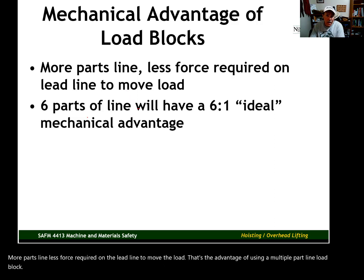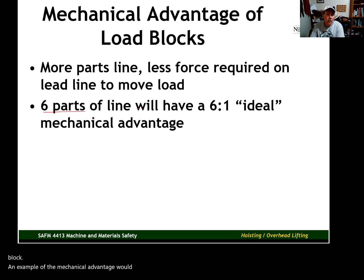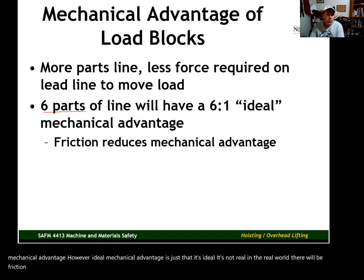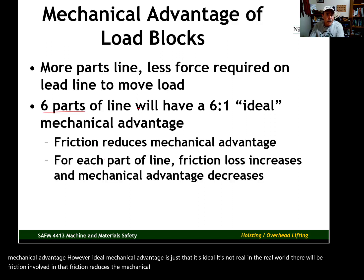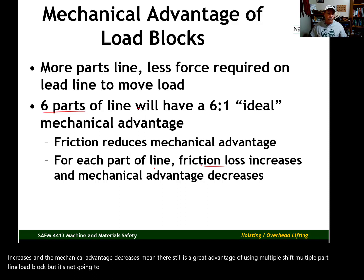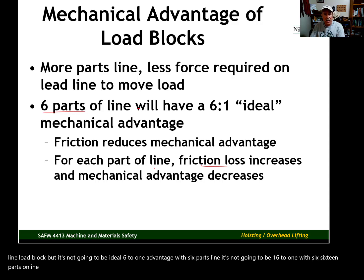An example of the mechanical advantage would be with a six-part line configuration. Six parts of line will have a six-to-one ideal mechanical advantage. However, ideal mechanical advantage is just that — it's ideal. It's not real. In the real world, there will be friction involved, and that friction reduces the mechanical advantage. For each part of line, the friction loss increases and the mechanical advantage decreases. There is still a great advantage of using a multiple-sheave, multiple-part line load block, but it's not going to be ideal — not six-to-one with six parts, not sixteen-to-one with sixteen parts. Friction takes away some of that advantage.